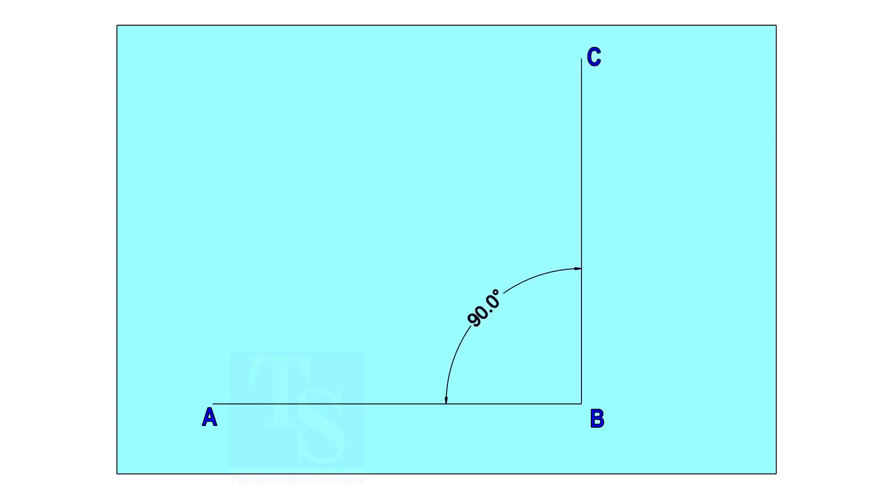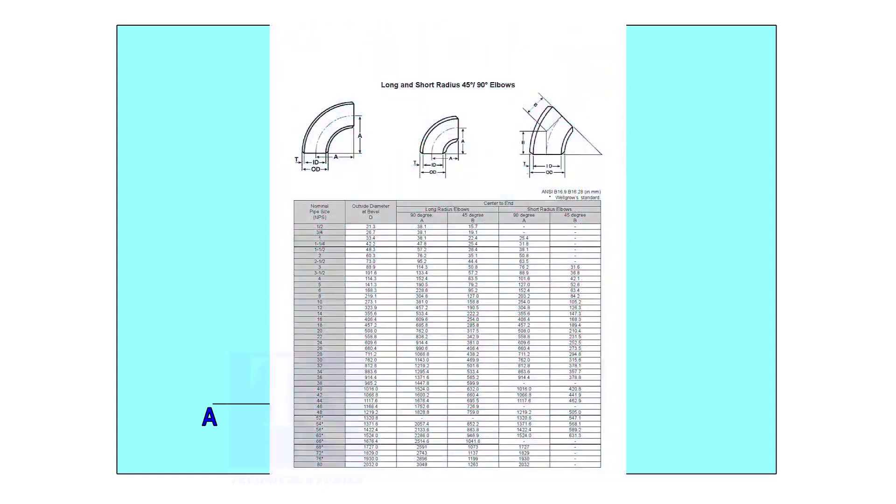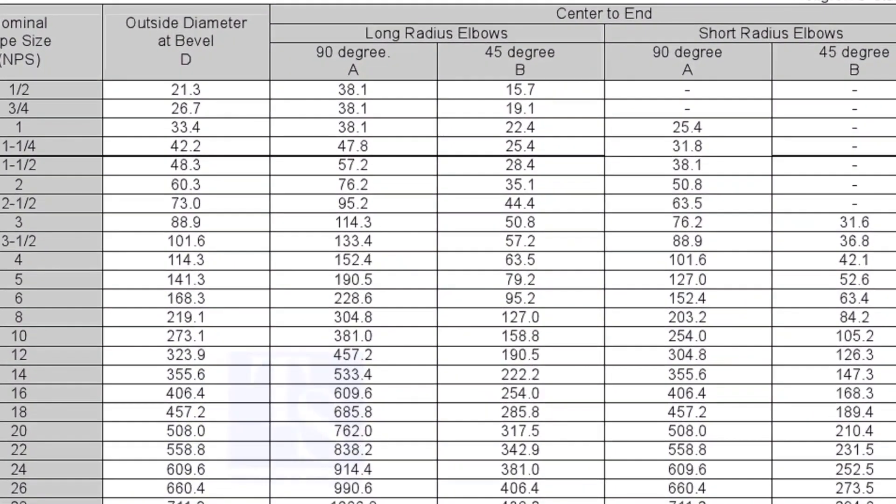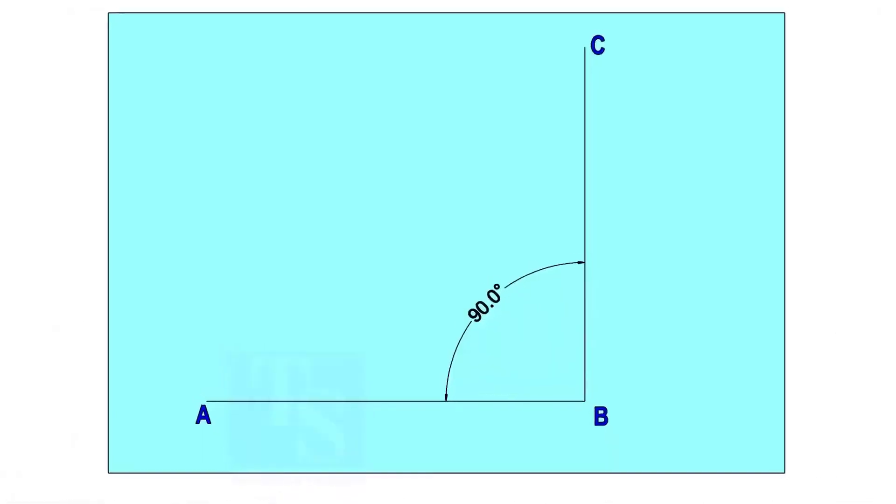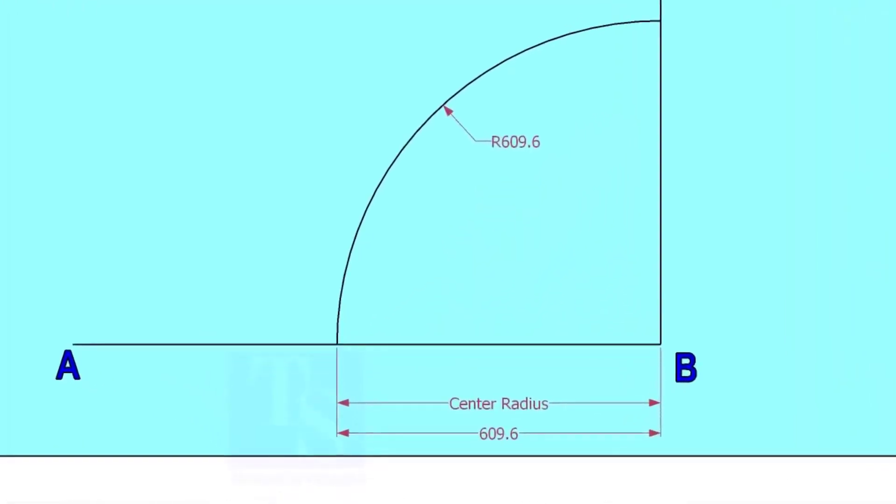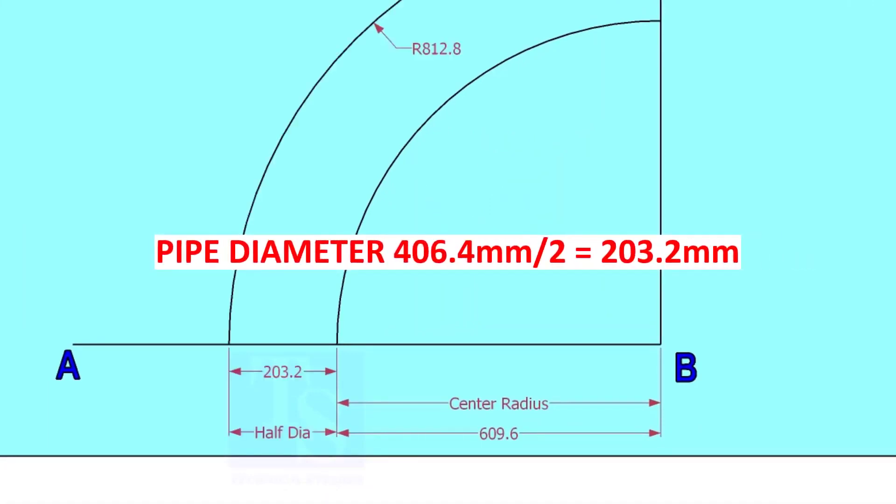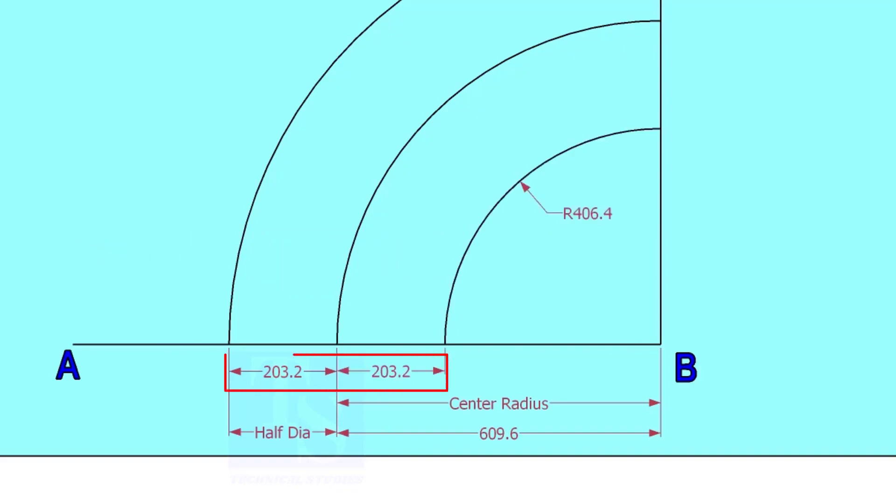Mark line AB and a perpendicular line BC. Let us check the center radius of 16-inch long radius elbow. Draw an arc with the center radius 609.6 millimeters. Mark the half OD arcs on both sides of the center line.